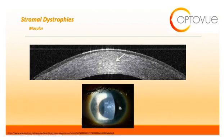Next, we have macular dystrophy, another stromal dystrophy. Macular dystrophy appears as gray-white stromal opacities with poorly defined edges extending from limbus to limbus with cloudy intervening spaces. OCT will show clearly defined separated hyper-reflective foci in the central cornea with generalized hyper-reflectivity of the central cornea.